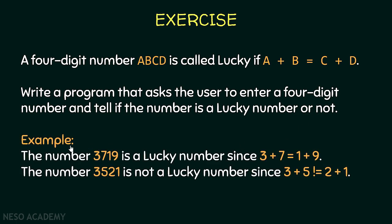Here are some examples of lucky numbers. The number 3719 is a lucky number because three plus seven is equal to one plus nine. Another example: 3521 is not a lucky number because three plus five is not equal to two plus one.